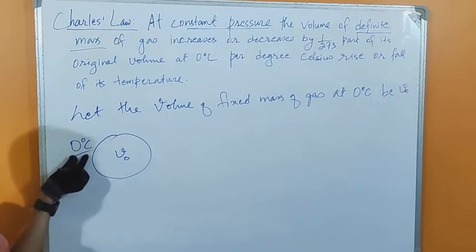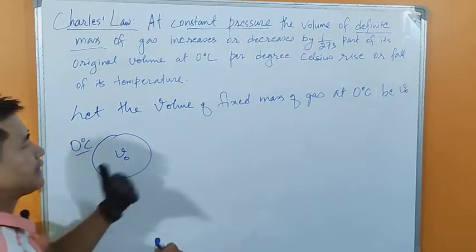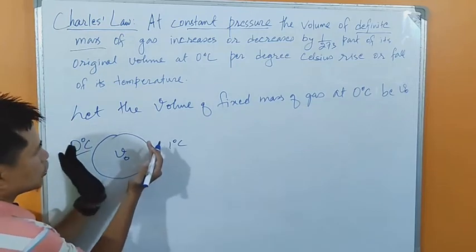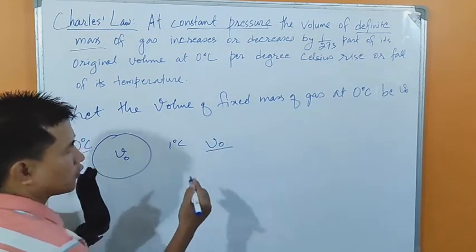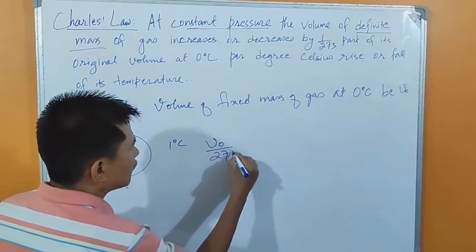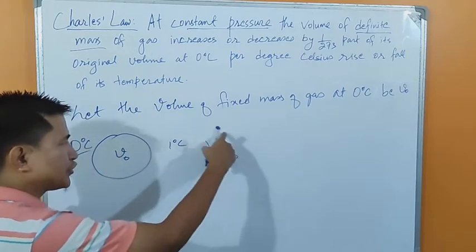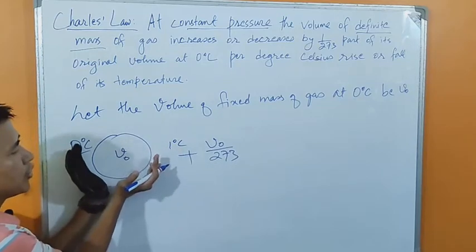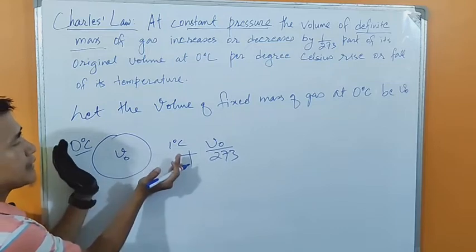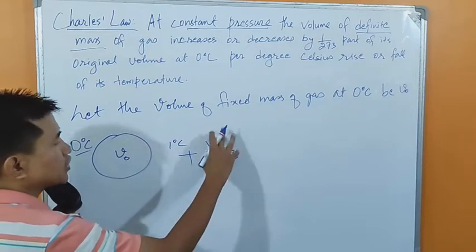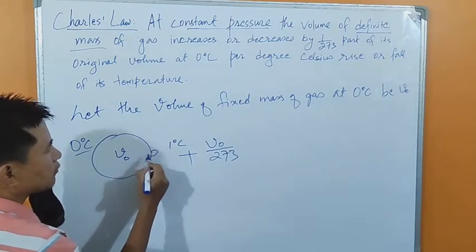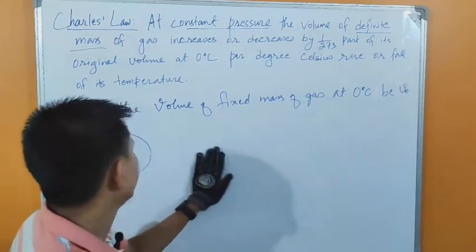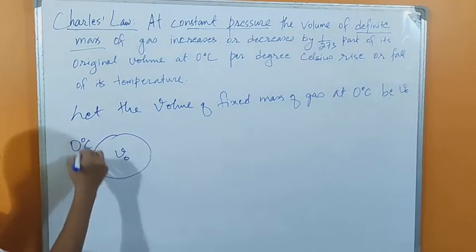So what Charles Law says is: when the temperature was 0°C the volume was V naught. Now when you increase the temperature by 1°C, V naught divided by 273 — that is, one part out of 273 — will be added to the original volume. So the volume will increase slightly.